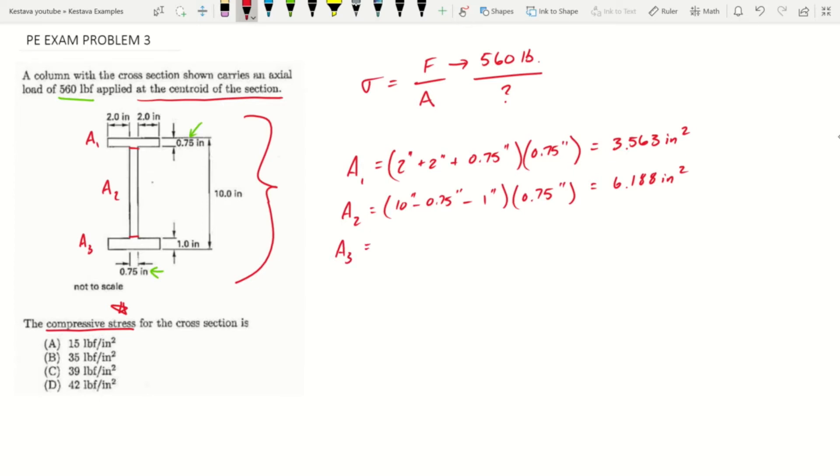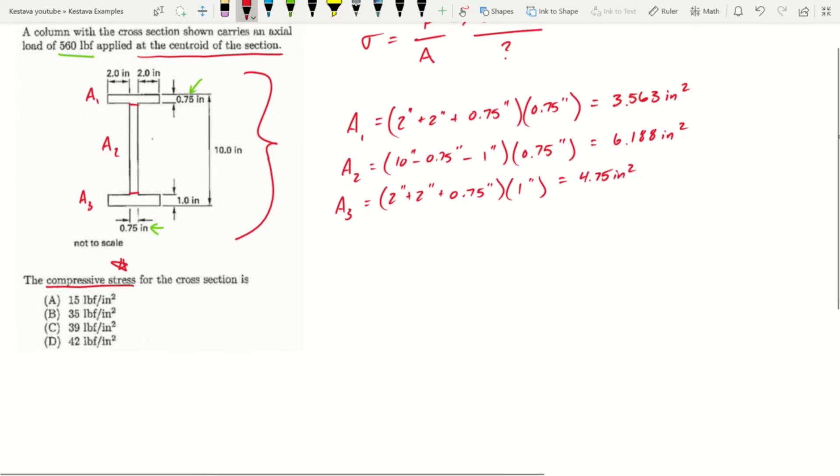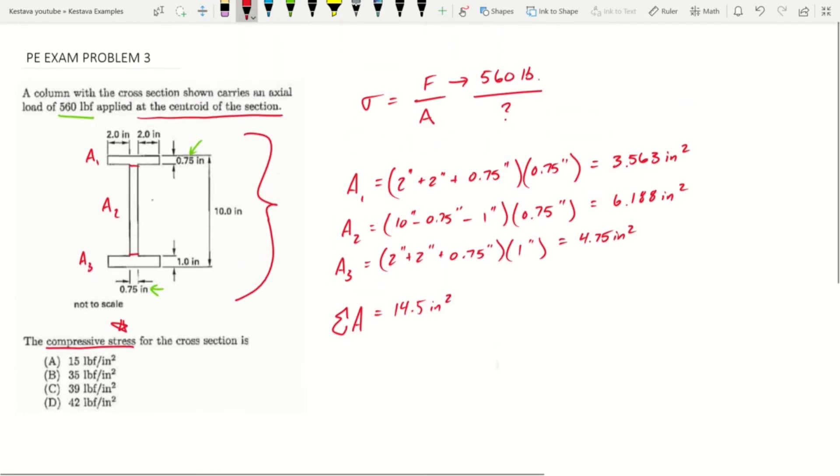The third area is our bottom flange. The width of the bottom flange, since they do not give dimensions at the bottom, you can assume that the bottom flange uses the same dimensions as the top. So we know it's 2 inches plus 2 inches plus 0.75 inches times thickness of the bottom flange, which is 1 inch. That equals 4.75 inches squared. Summation of the area equals 14.5 inches squared. Now we have our area.